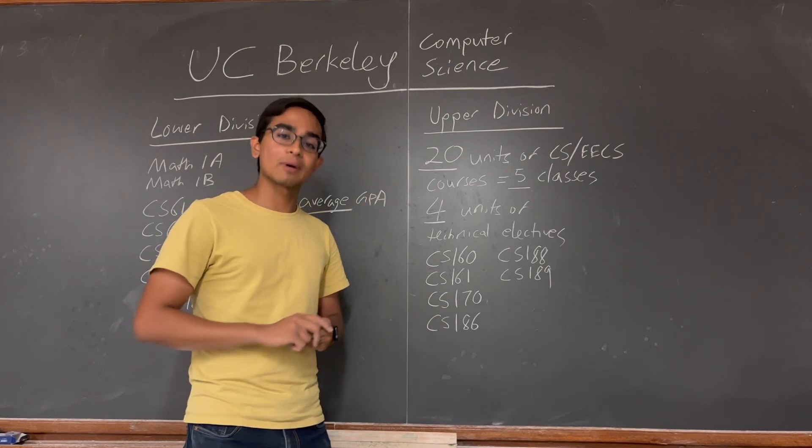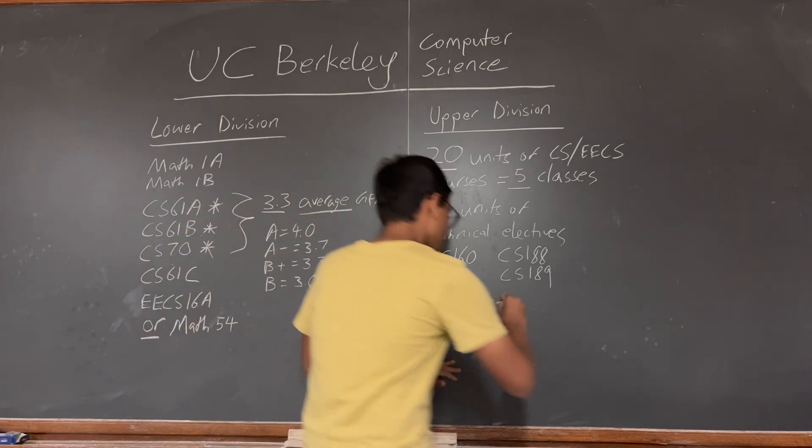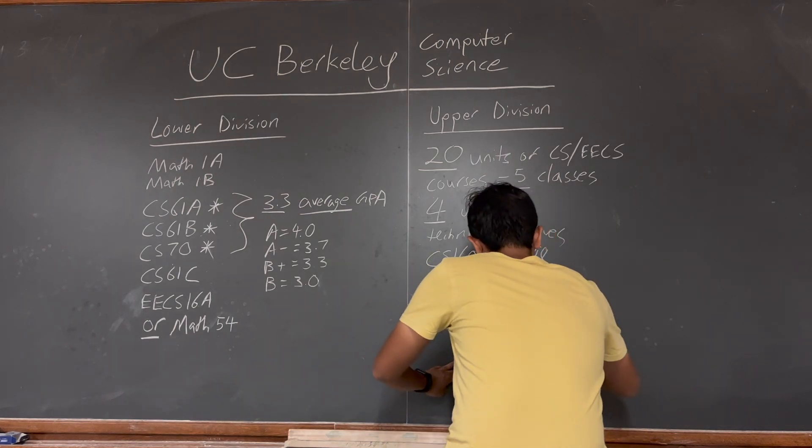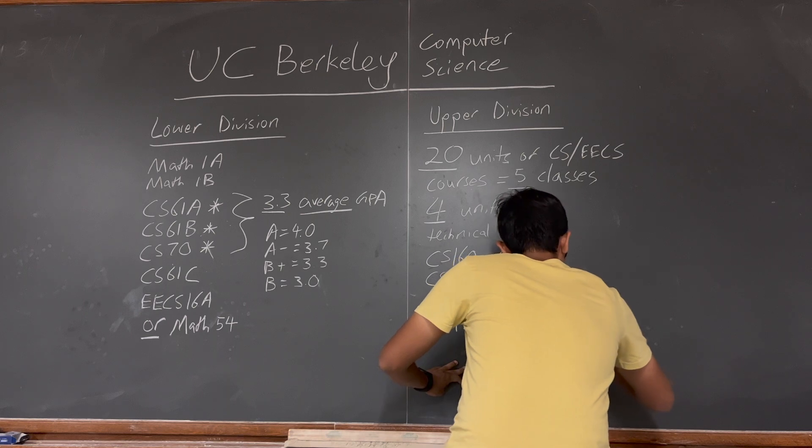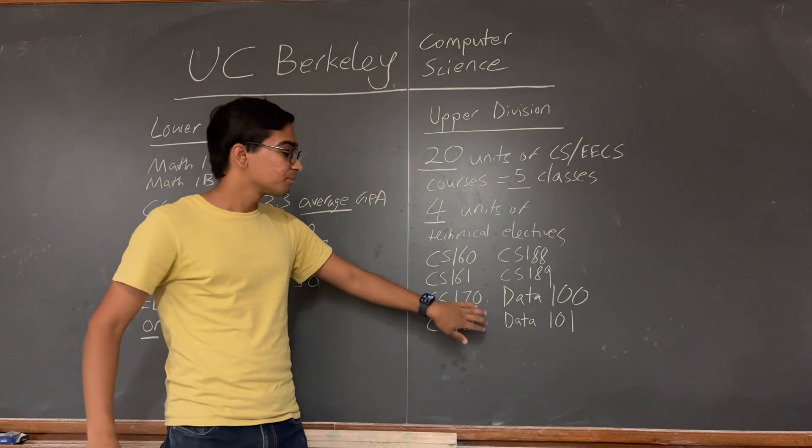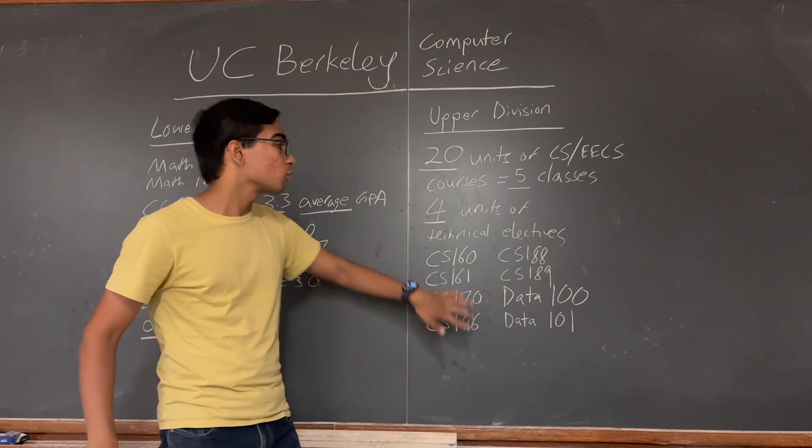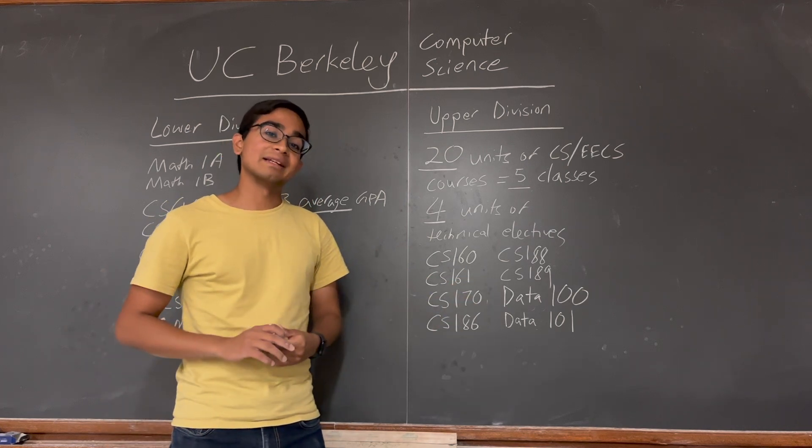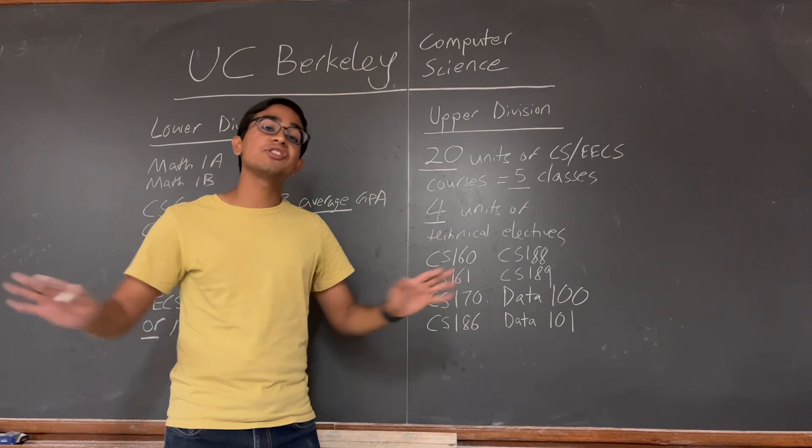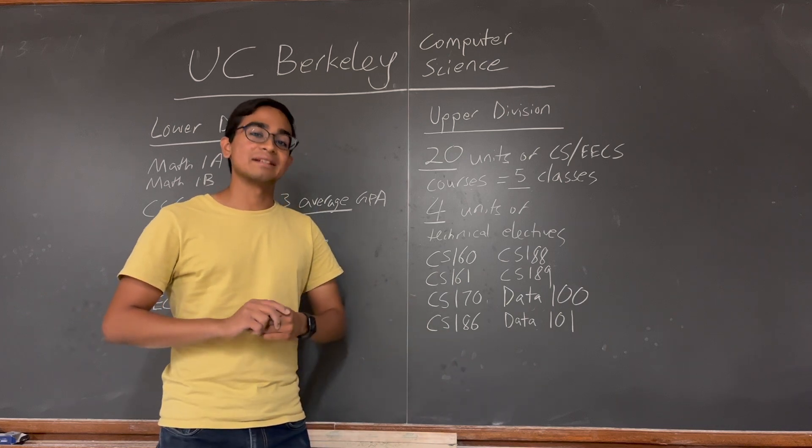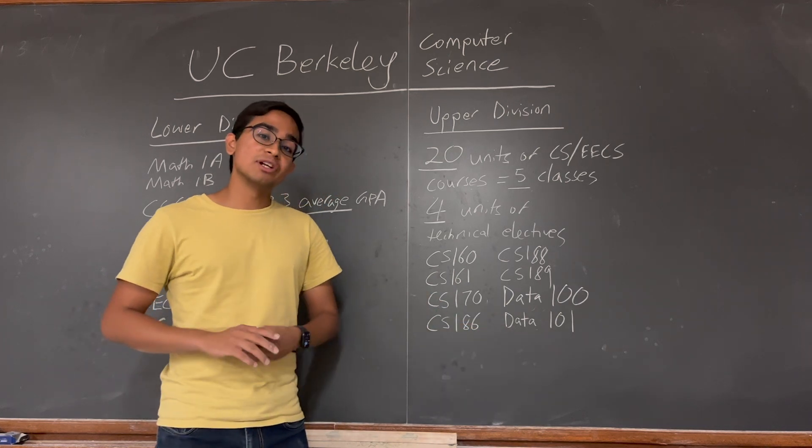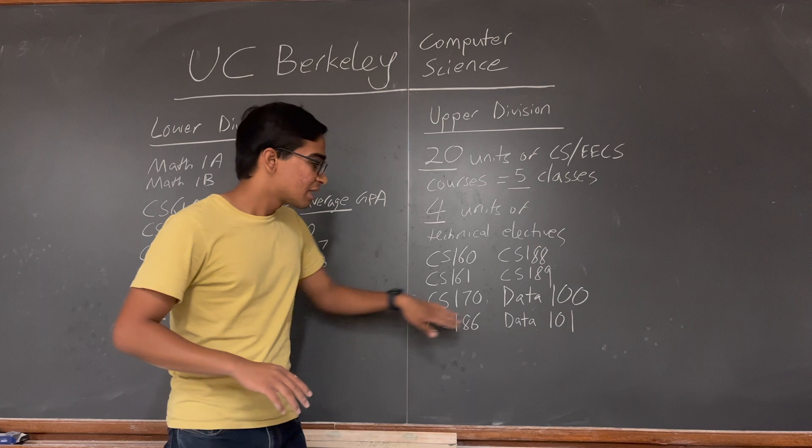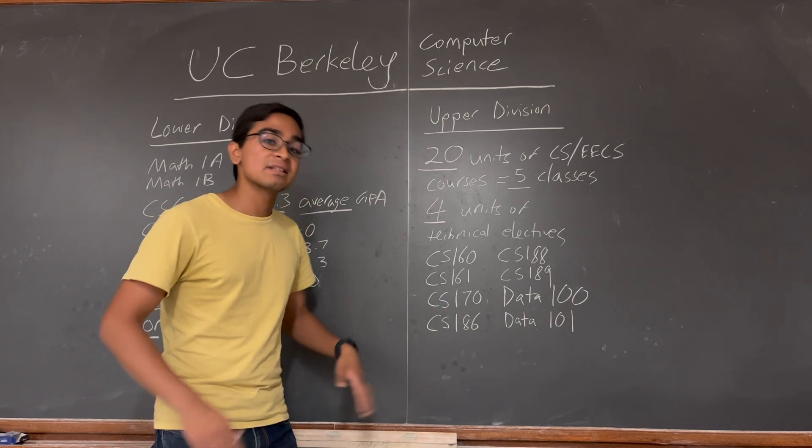There are two more classes that I want to highlight from the Data Science major. Data 100 and Data 101. These two classes also fulfill these 20 units of courses that you have to take. Data 100 is Advanced Data Science Techniques. You can think of it as this class will teach you everything you need to know to be a data scientist in industry. Data 101 is Data Engineering. It is a CS 186 class at a higher level of web extraction for data science. Also a very good class if you're interested in databases and data engineering.